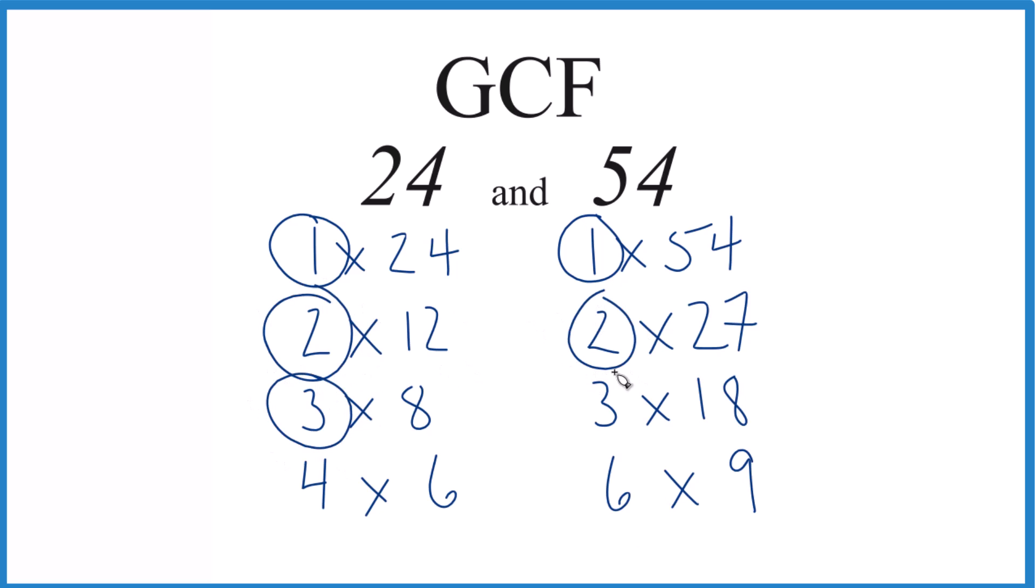3, that's a common factor as well. 4, we don't have that. How about 6? 6 goes into 24 and 54 evenly.